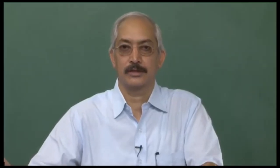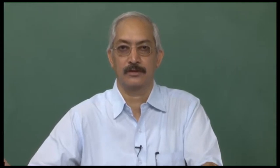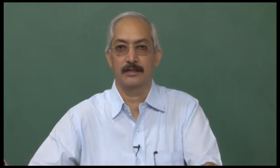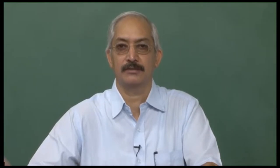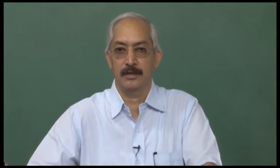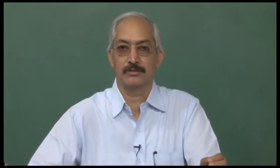Welcome viewers to the NPTEL lecture series on the calculus of variations. This is the eighteenth lecture of the series. We recall that in the last lecture we started with sufficient conditions on the integrand of the functional. We obtained Jacobi's equation, which ensures that we have a central field at the point A of the extremal. We would like to see that point B is within the central field, meaning around B the extremals do not intersect. That is the condition known as Jacobi's condition.